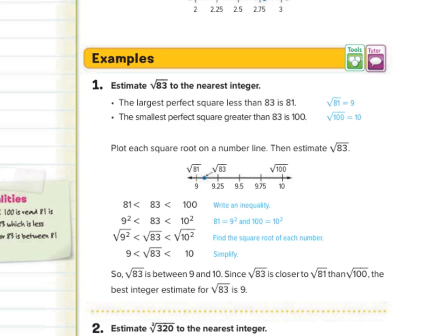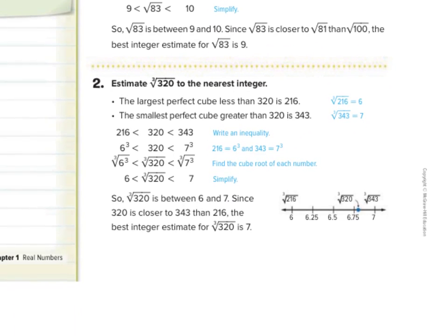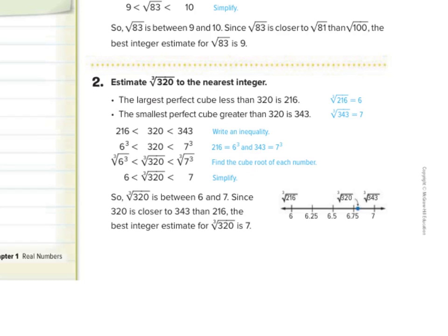Now, cube roots, we can use the same process. Let's estimate the cube root of 320 to the nearest integer. Well, this again requires some cube roots, and 6 times 6 times 6 is 216. 7 times 7 times 7 is 343. And so as we look through there, let's look to compare. The cube root of 216 was 6. The cube root of 343 was 7. 320 is closer to 343, and so our nearest whole number estimate is going to be 7.